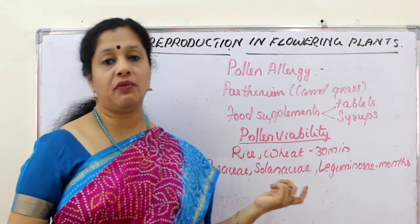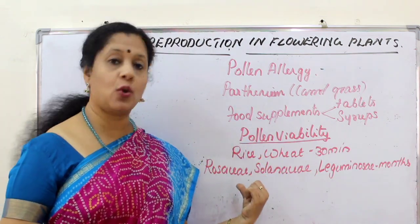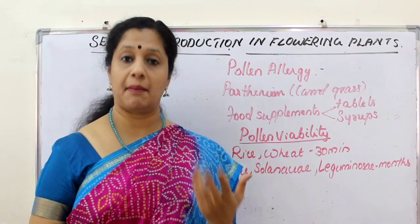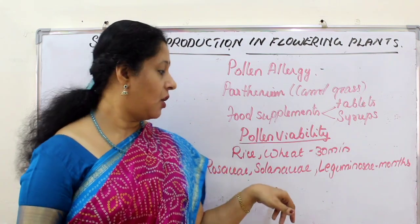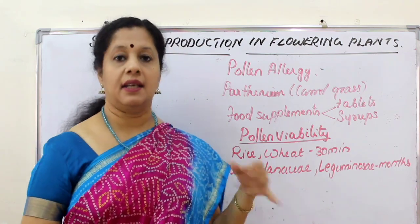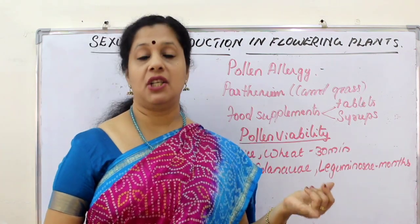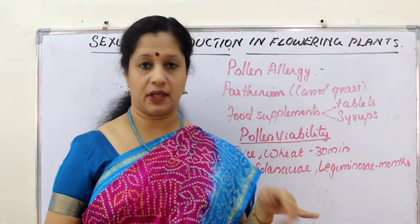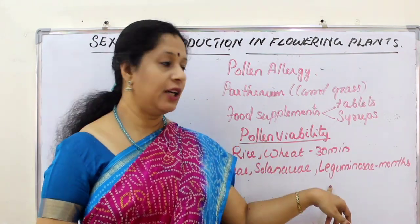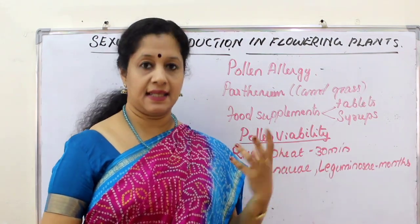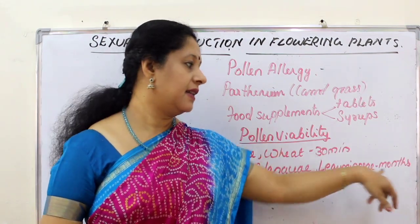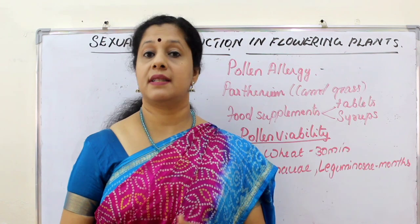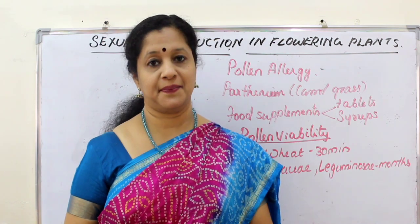Once pollen is released, within 30 minutes it should land on a suitable stigma, otherwise it cannot germinate. But in families like Rosaceae — the family of rose, apple, etc. — or Solanaceae, or Leguminosae (dal varieties), the viability period is for several months.